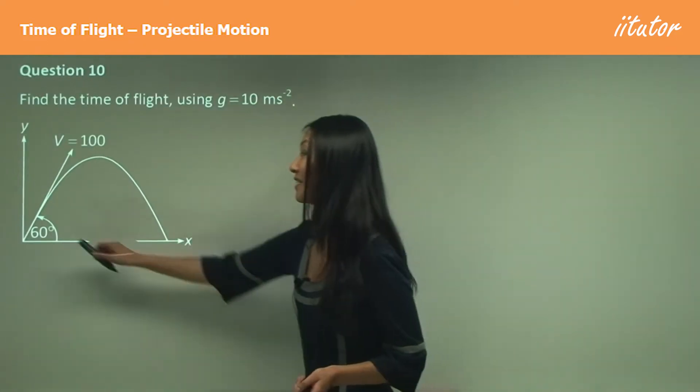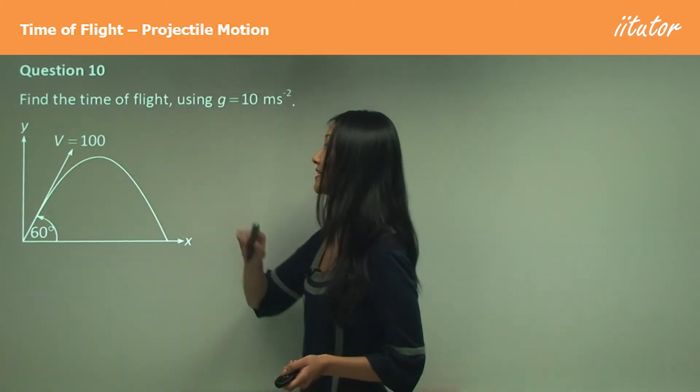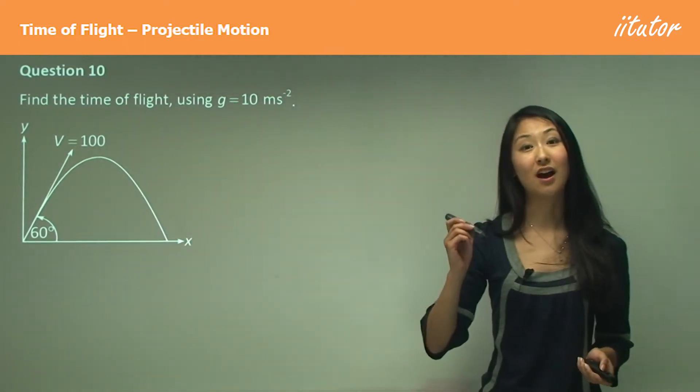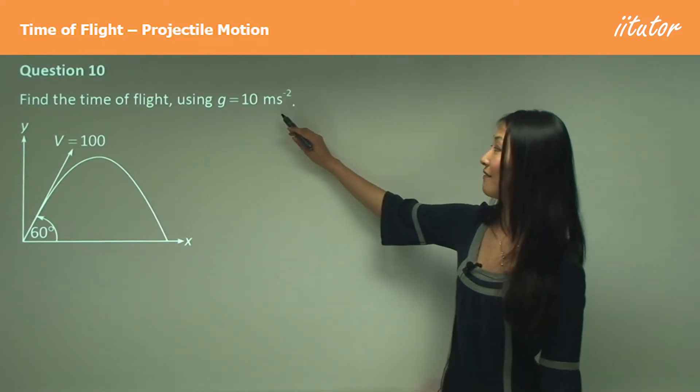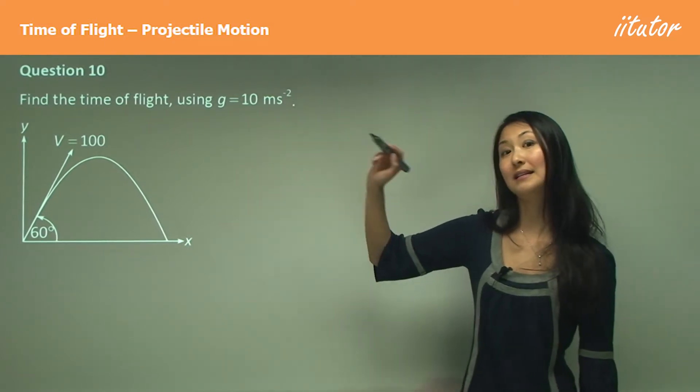So Question 10 here: angle 60 degrees, our velocity is 100, and we want to find the time of flight of this object using gravity equals 10 meters per second squared.